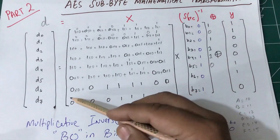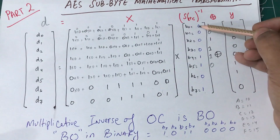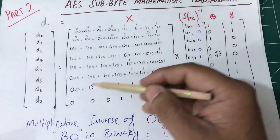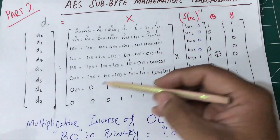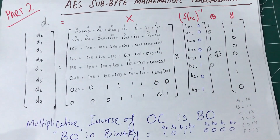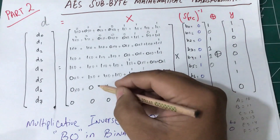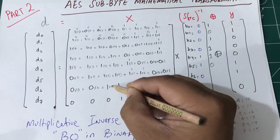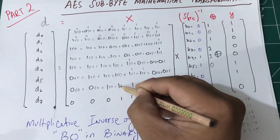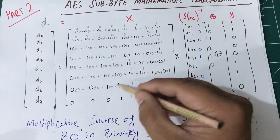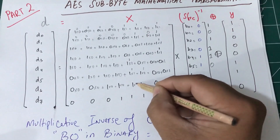Just to recap why we're doing this: we are distributing the B values across the matrix row elements. Since this is matrix multiplication in the AES Galois field, we add them using modulo-2 arithmetic, which is equivalent to the XOR operation.